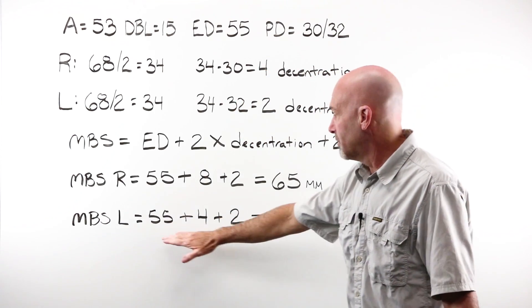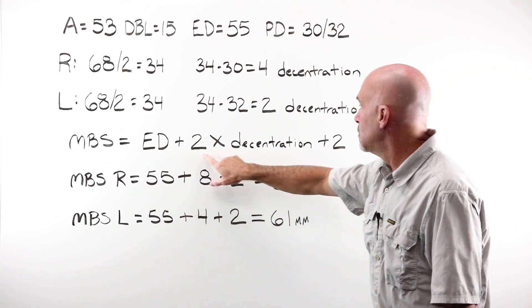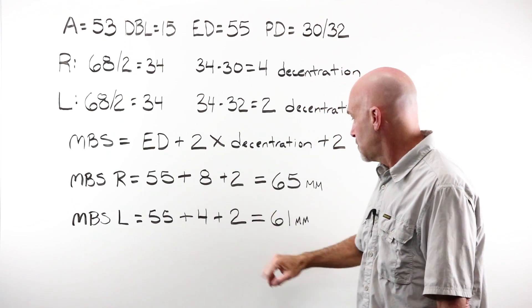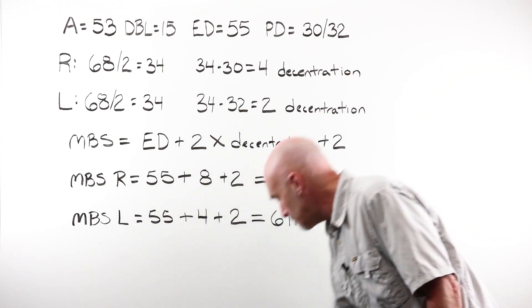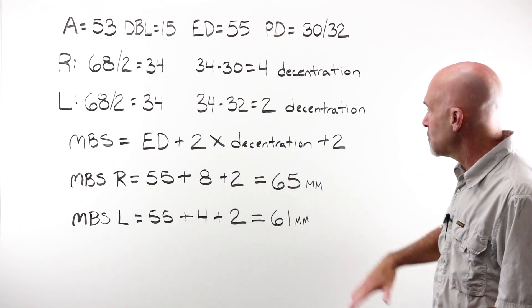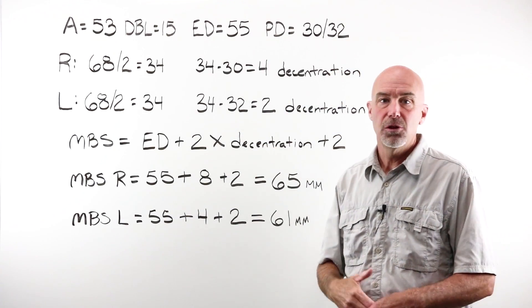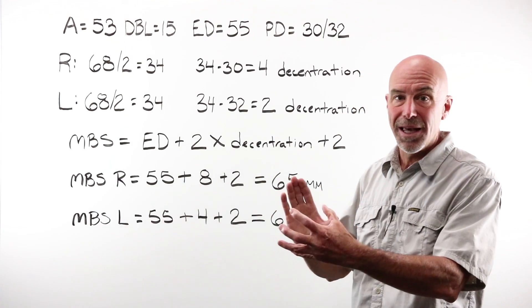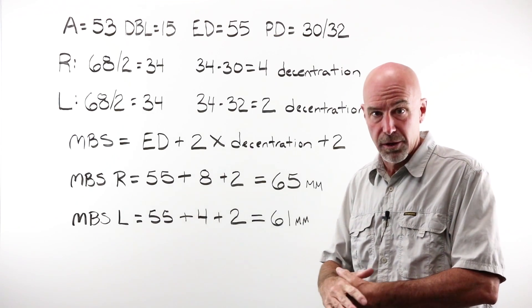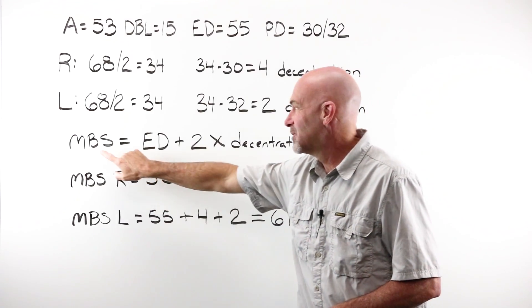For my left, I've got my ED of 55, plus four. Where did the four come from? Two times two, the millimeters of decentration for the left eye, plus two gives me a lens blank size of 61. Why is this one less than this one? Because decentration in the left eye is less than the decentration in the right eye. That lens physically has to move less. Hence, less chance of it creating a gap along the edge of the eye wire opening. So this is the correct formula or calculation for determining MBS.